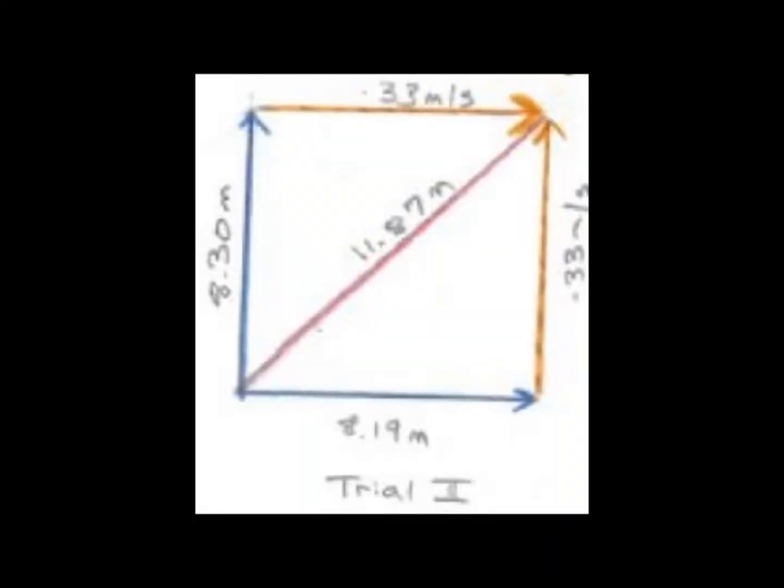Choose a scale such as one centimeter equals two meters. Draw the x and y vectors to scale. Do not simply draw in the hypotenuse. You must use the measured distance from the field. Include arrowheads.